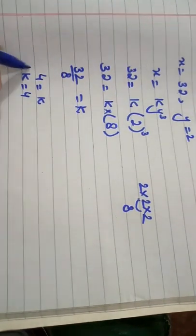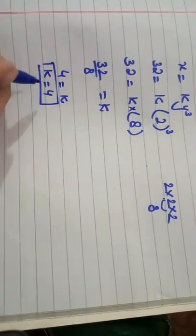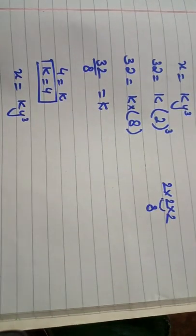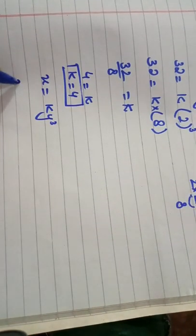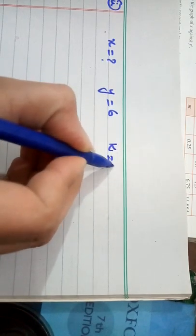Exercise 1, Question number 1. If x is directly proportional to y cubed and x is equal to 32 when y is equal to 2. First of all, we make a connecting equation that shows the relation of x against y cubed, that is with direct proportion with each other. So x is directly proportional to y cubed.